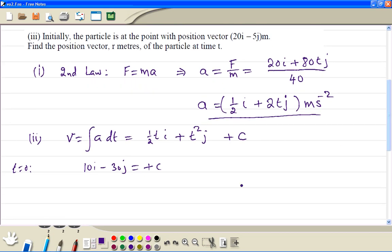Therefore, we get the velocity equal to half ti plus t squared j plus c, which is 10i minus 30j.